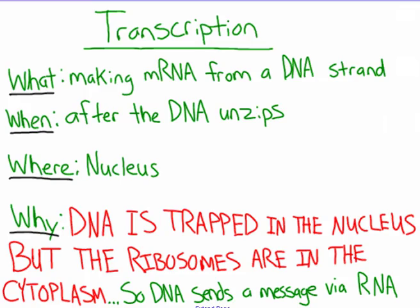Let's cover the what, when, where, and why of transcription. First, what is transcription? It is making mRNA from a DNA strand — we unwind the DNA and make a single-stranded RNA strand. When does this happen? It happens after we unzip the DNA, and it takes place in the nucleus. If you are taking notes, please star or highlight the 'why' because it's really important.